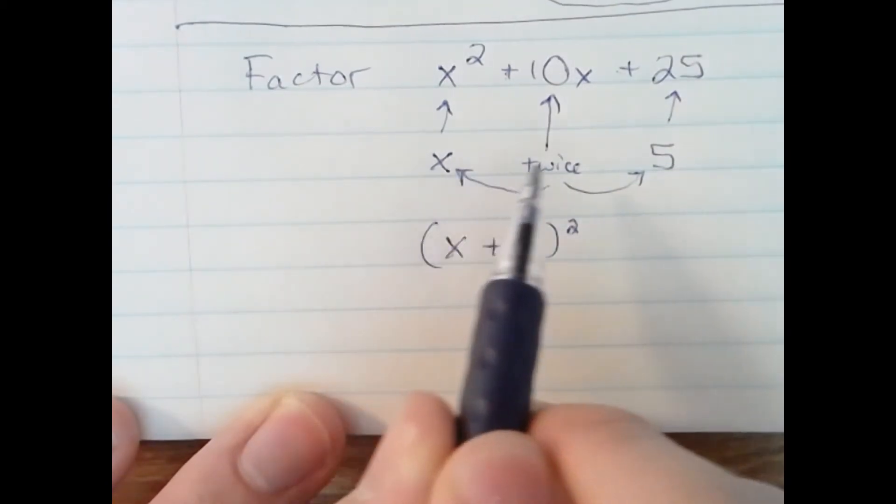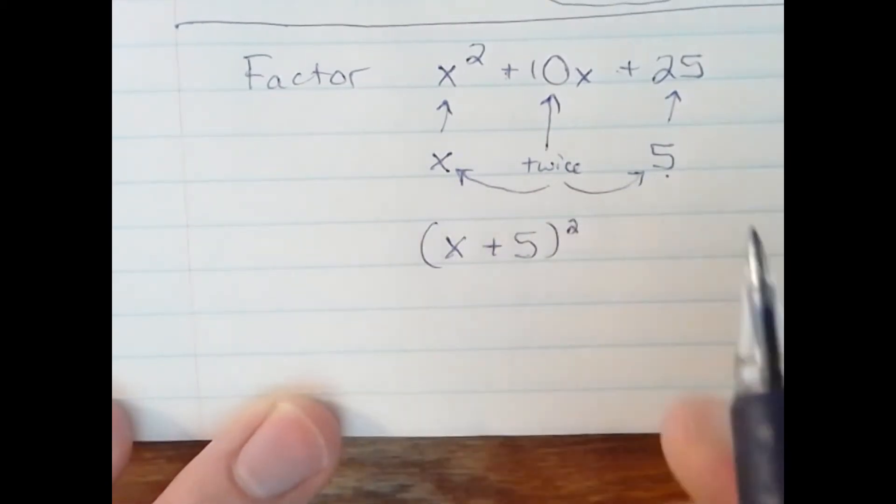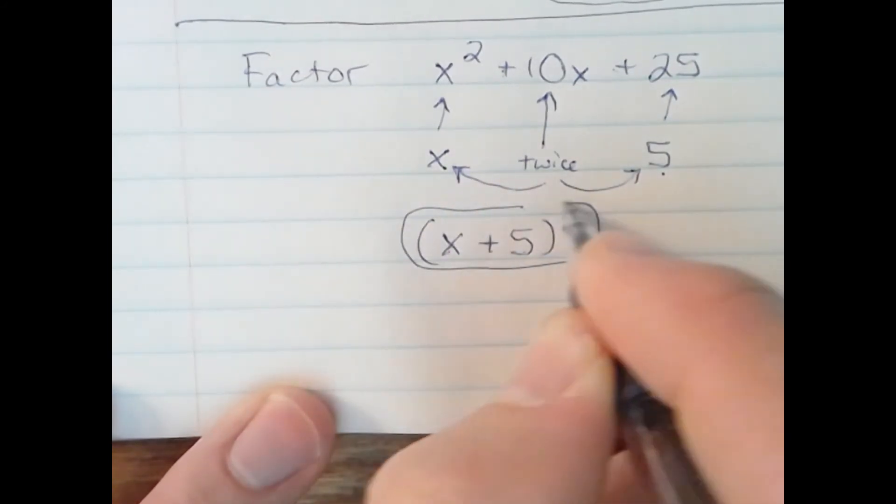And that is, notice that's the first term square root and the last term square root added together. And we are done.